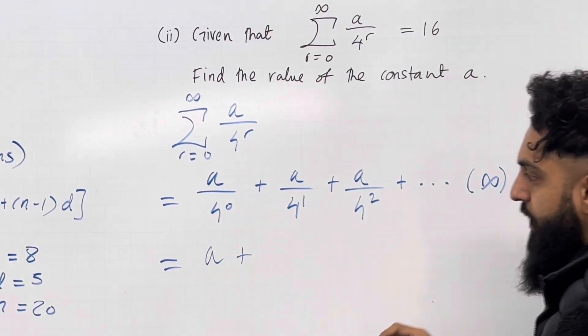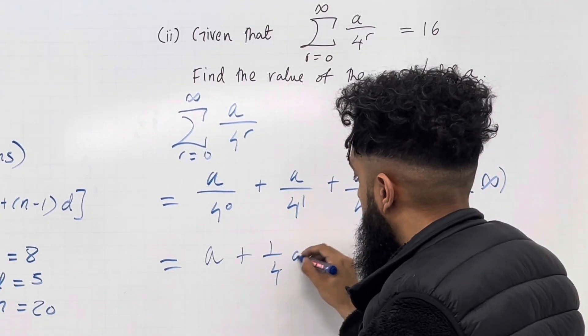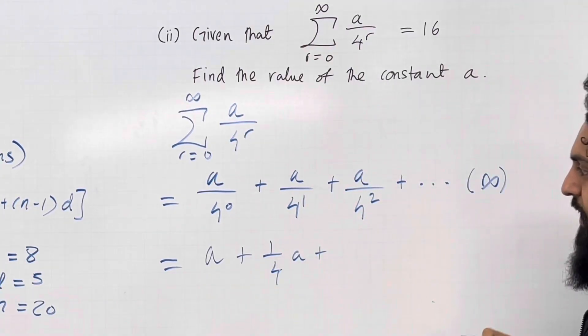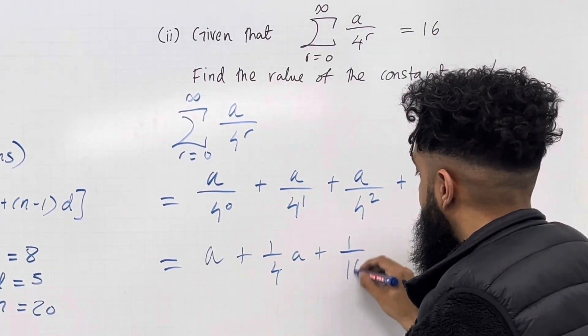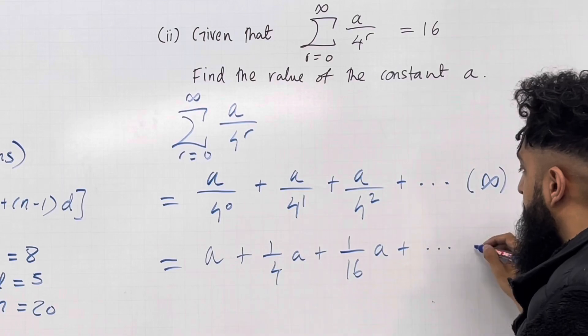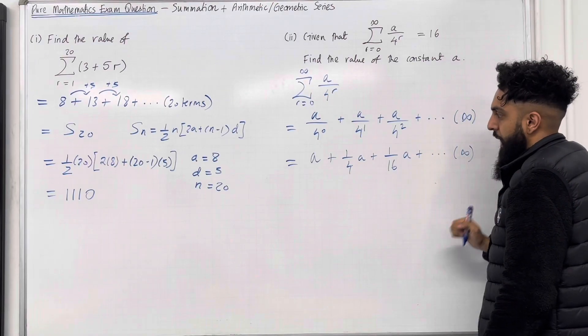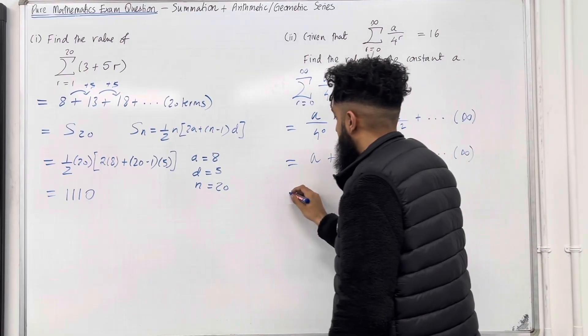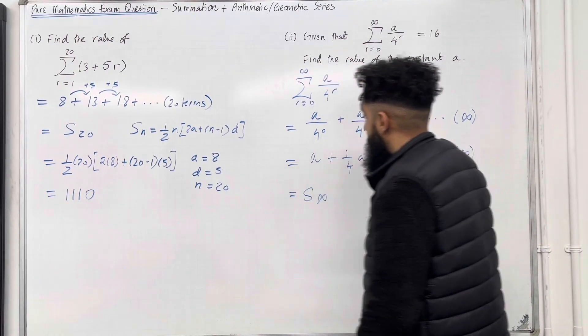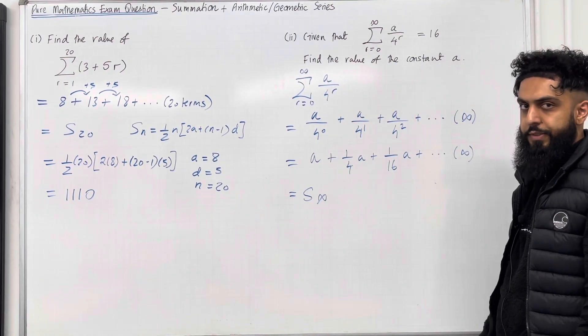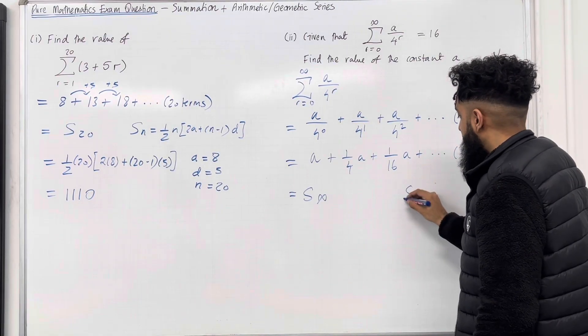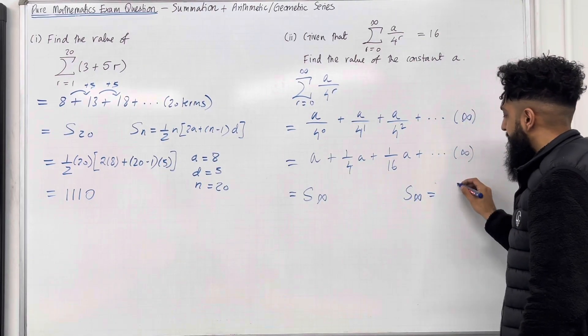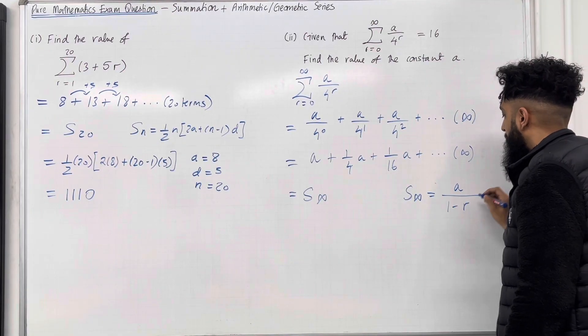Plus, we can rewrite the second term as a quarter a. Plus, we can rewrite the third term as 1 over 16a plus dot dot dot summing to infinity. So the mathematical notation that we use for this summation is s infinity. Ladies and gents, we have a geometric series.